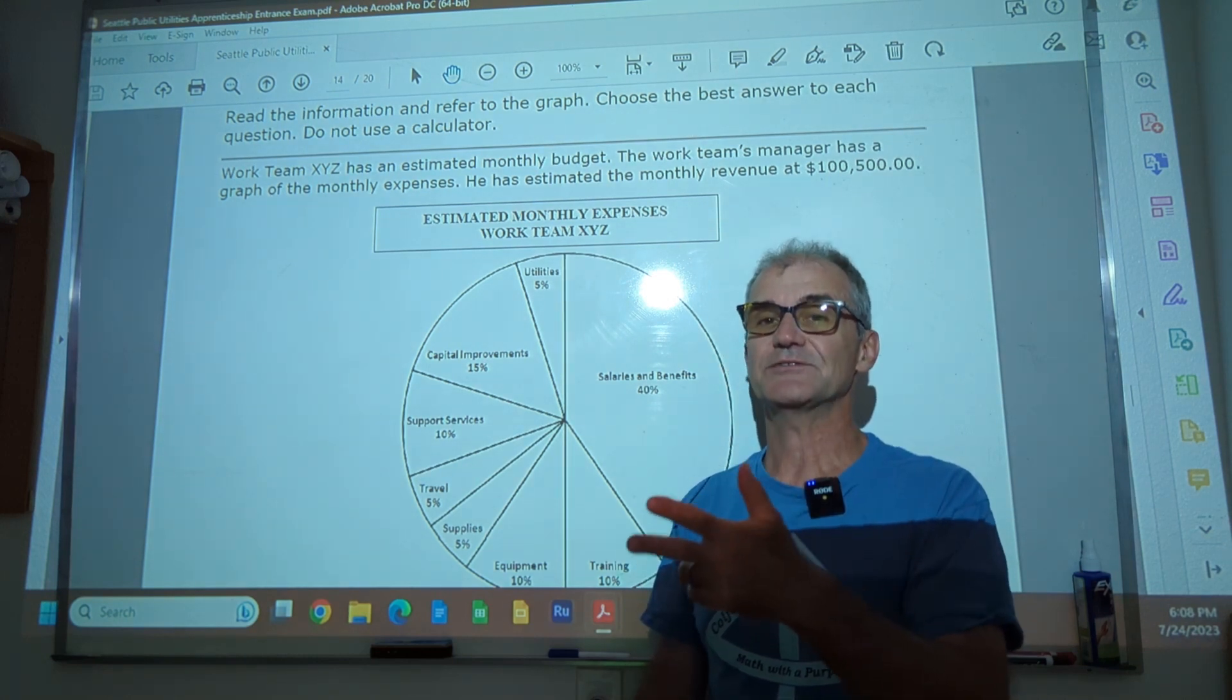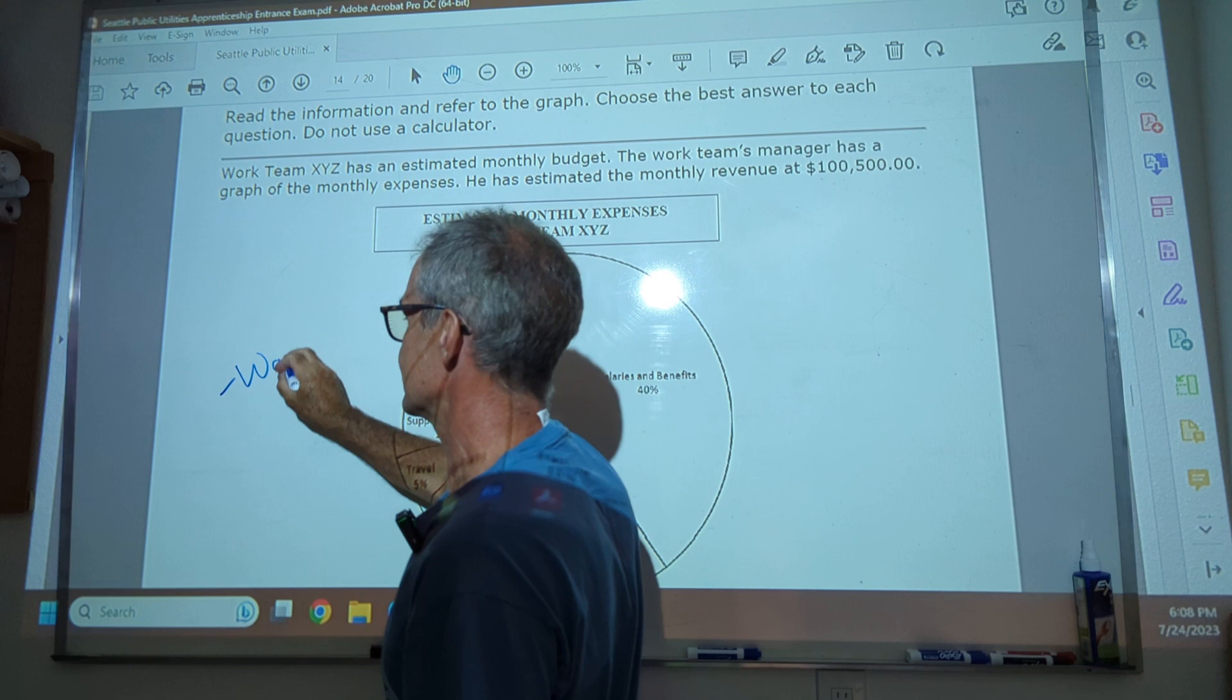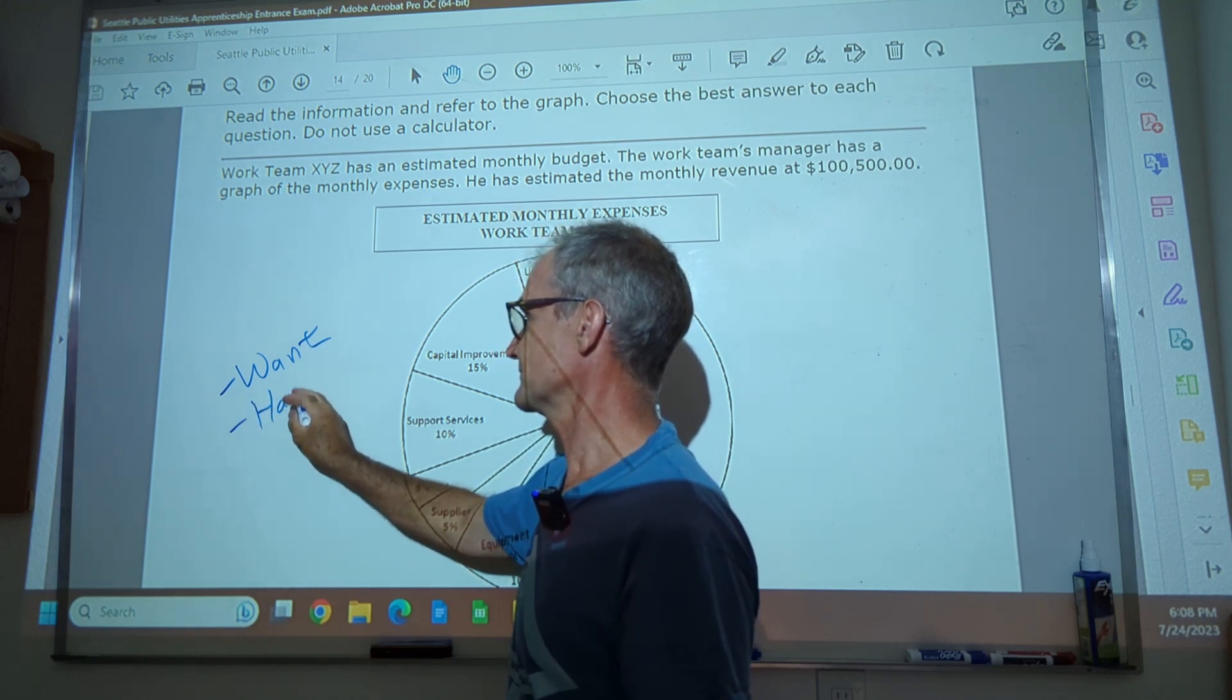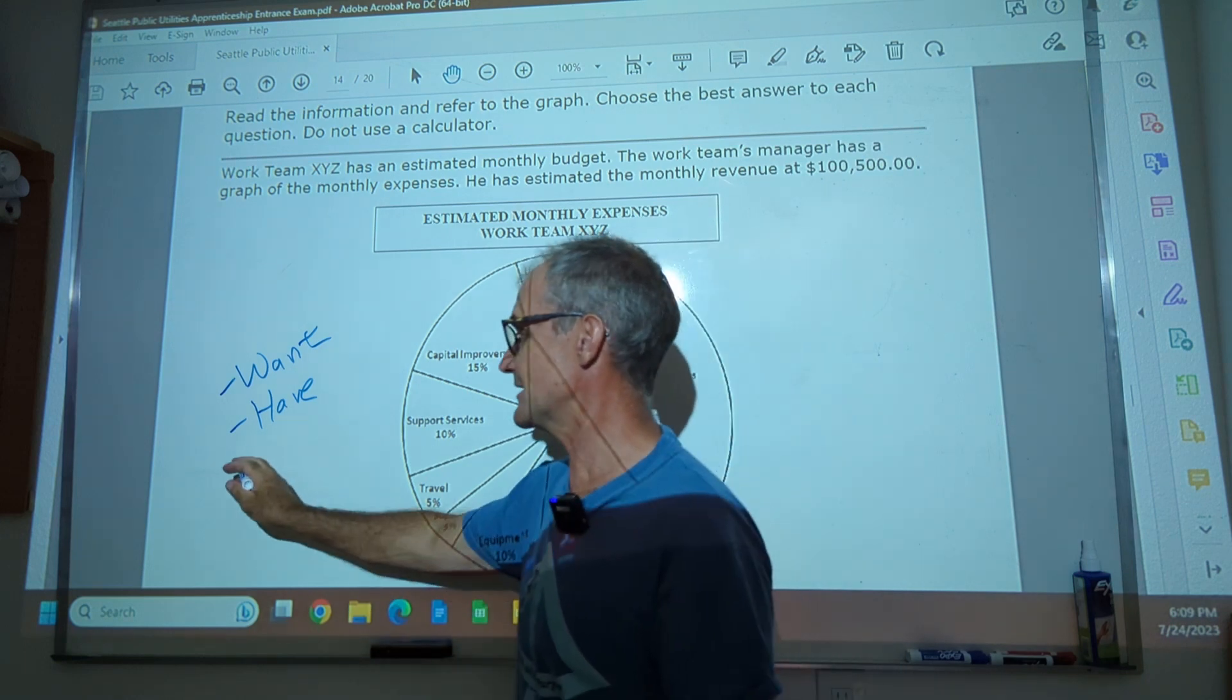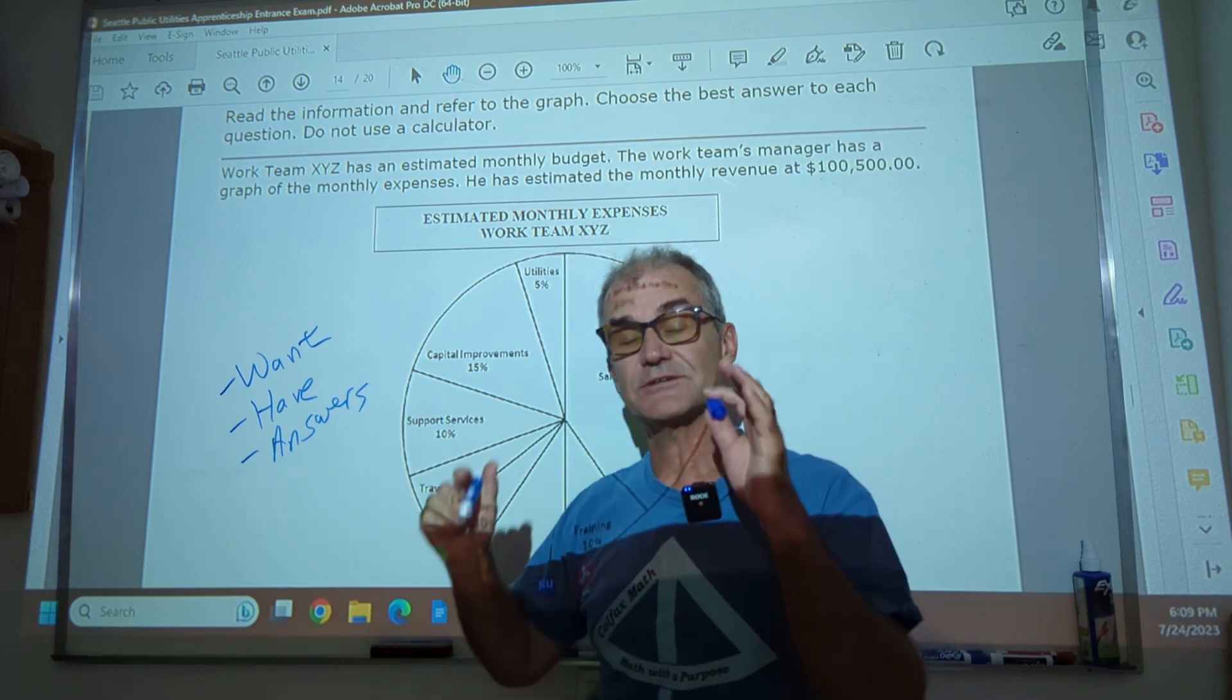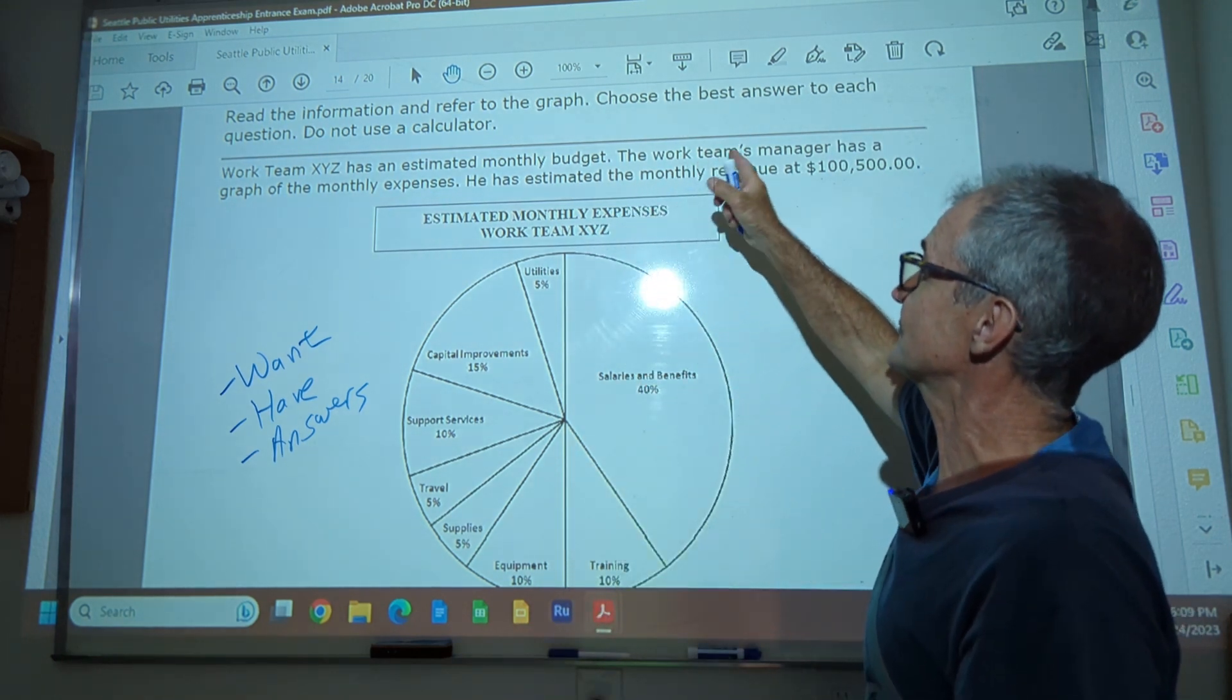I do have a three-step process that I highly recommend you follow. Step one is you really need to identify what you want - what is the question actually asking you? What you have - what are the actual pieces that you're given? And then the third step after that is look at the answers really before you do a lot of calculations. These are timed tests so you don't have all that much time to work. So let's go ahead and read through this problem, read the information, refer to the graph.